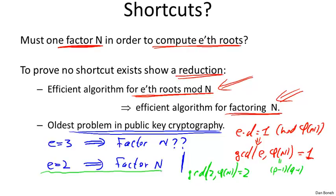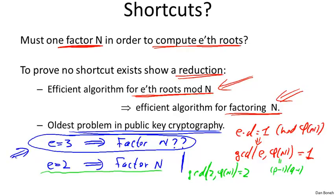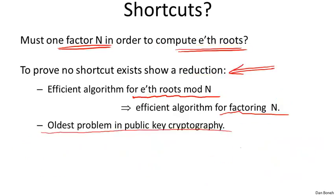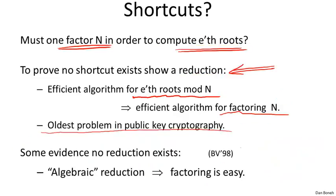So the smallest RSA exponent that's legal is in fact e equals three. But for e equals three, the question of whether computing cube roots is as hard as factoring is an open problem. It's a lot of fun to think about: if I give you an efficient algorithm for computing cube roots modulo n, can you use that algorithm to actually factor the modulus n?